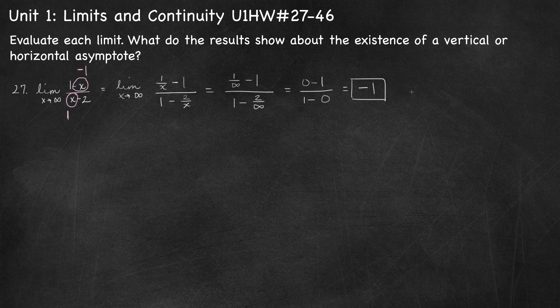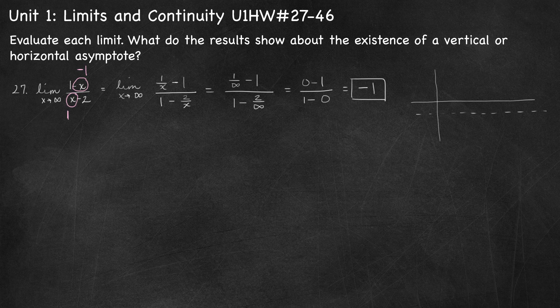What does this say about the existence of a vertical or horizontal asymptote? The limit as x approaches infinity is negative 1. Graphically, as x approaches infinity — looking at the far right-hand side of the graph — the y values are getting closer and closer to negative 1. So this is a horizontal asymptote at y equals negative 1. When you describe a horizontal asymptote, it is a line, so give the equation: y equals negative 1.